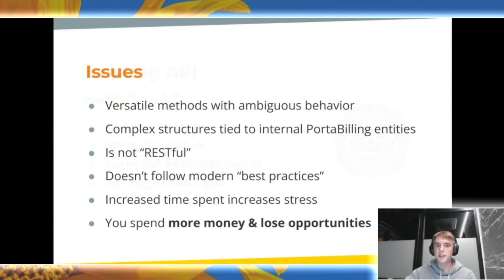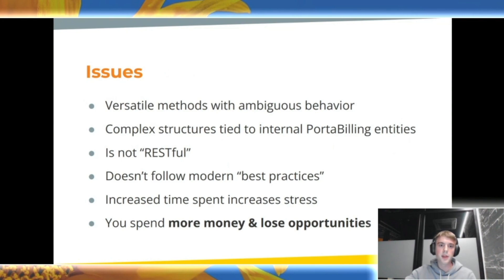API methods created that long ago do not comply with modern expectations. We built versatile methods with ambiguous behavior, but failed to document them well. Input values could be changed by the system depending on realm, input parameters, and permissions, so the output data can differ from what was actually requested. We tied API structures to the internal Portabilon entities, which results in large data objects with unclear names.